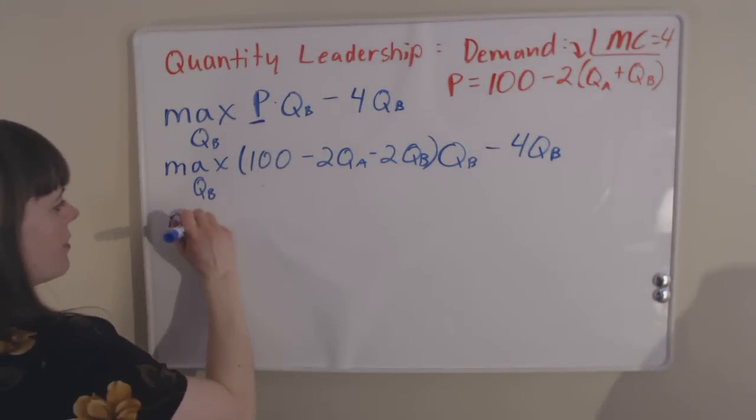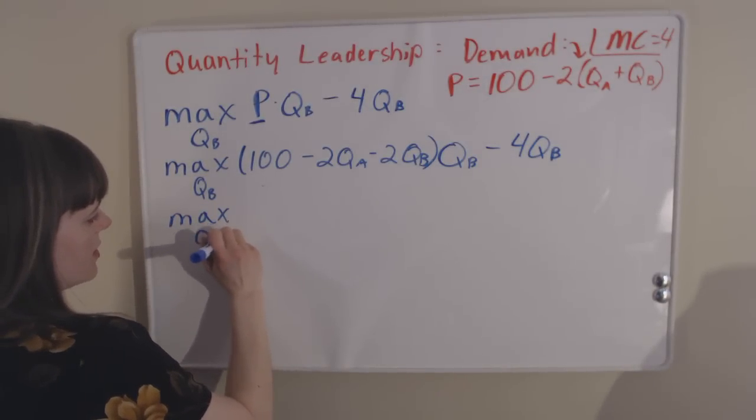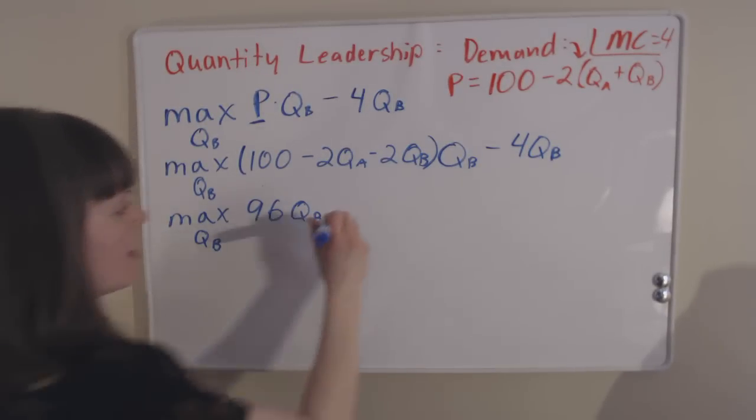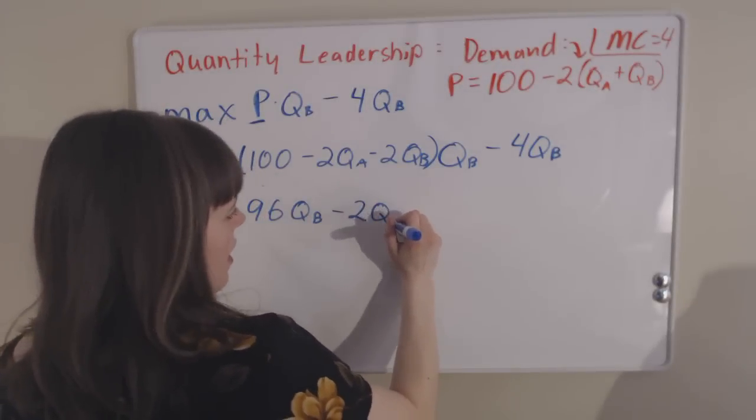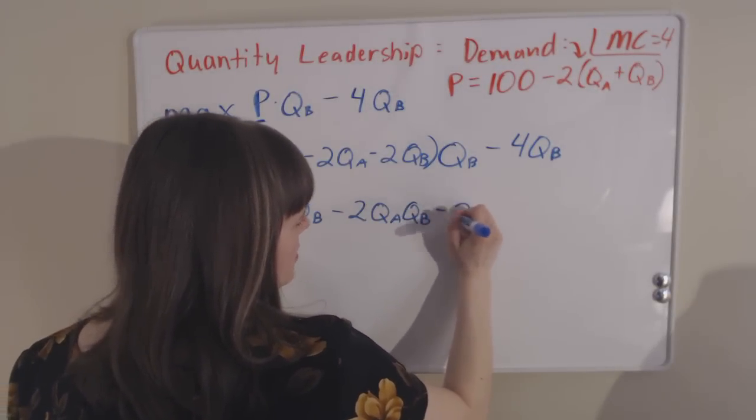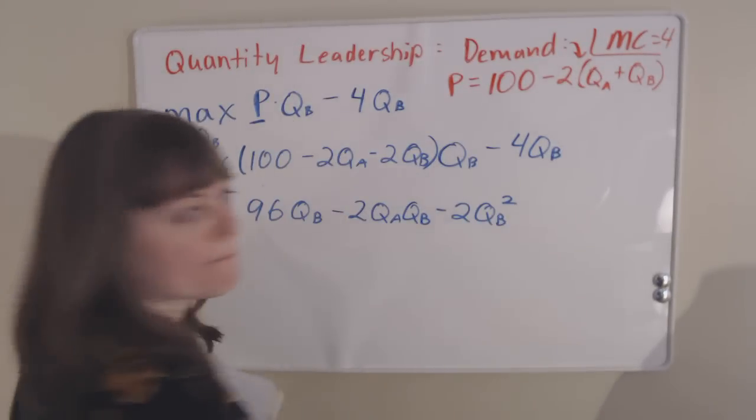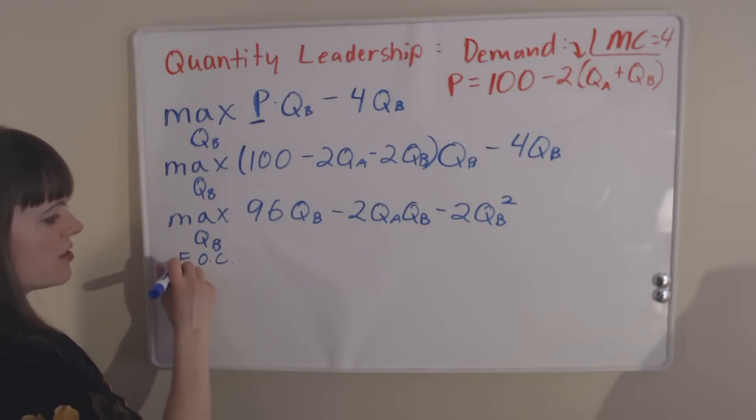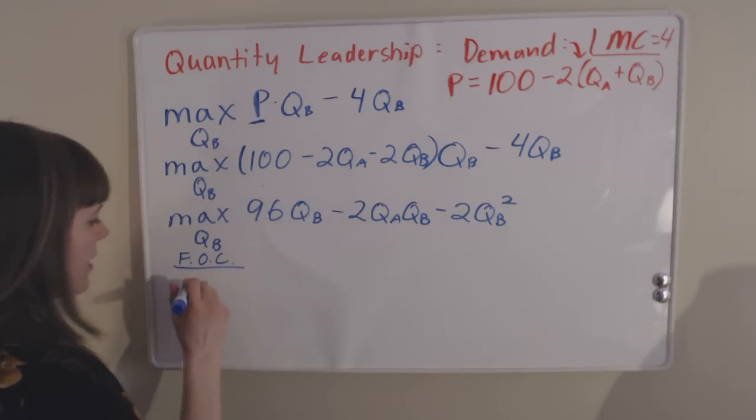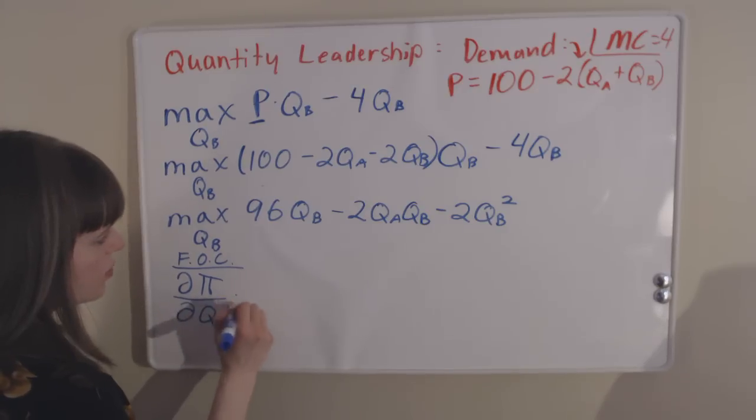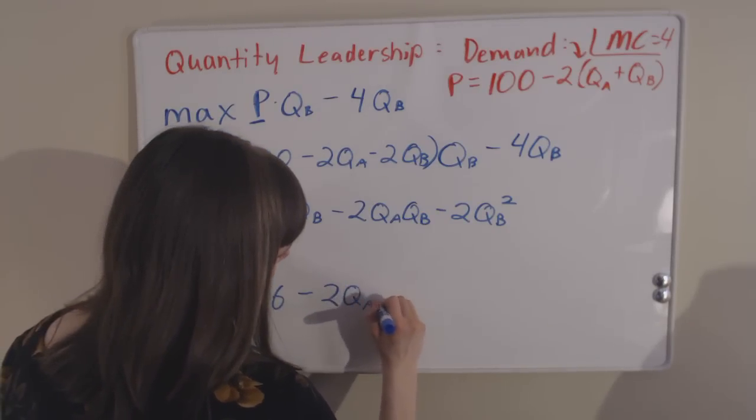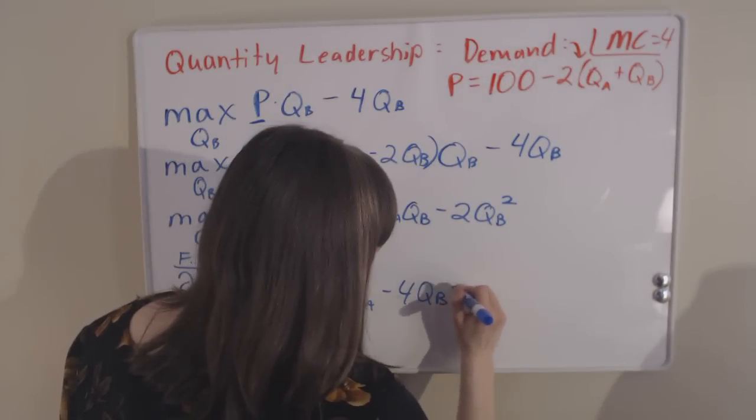You can simplify this down using algebra, and it's going to give you 96QB minus 2QAQB minus 2QB squared. Now we've got our full profit maximization function, and we can take our first order conditions to solve for the optimal level of QB. We take the first order conditions of our payoff function with respect to QB, and we get 96 minus 2QA minus 4QB equals 0.